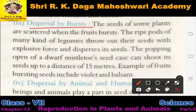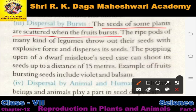The second type is dispersal by bursting. The seeds of some plants are scattered when the fruits burst. Jab ek fruit completely mature hokar burst ho jata hai — hum keh sakte hain woh phut jata hai — to uske jo seeds hain woh alag alag jagah par disperse ho jate hain.